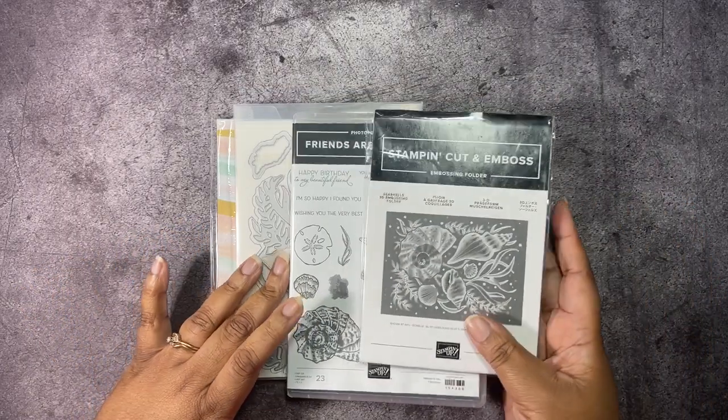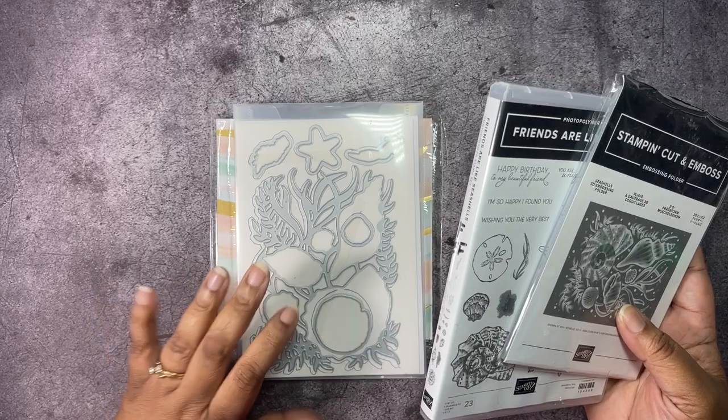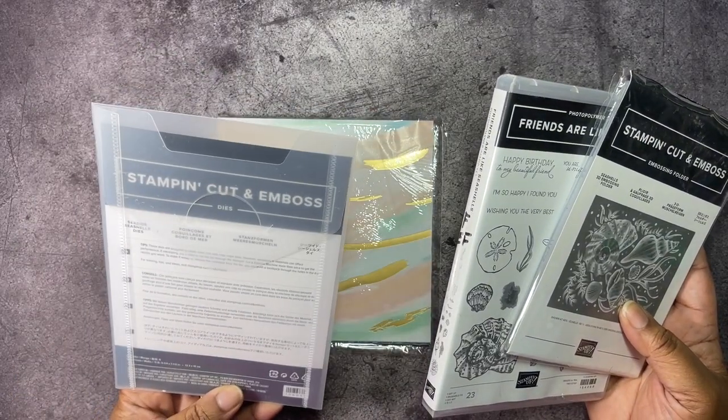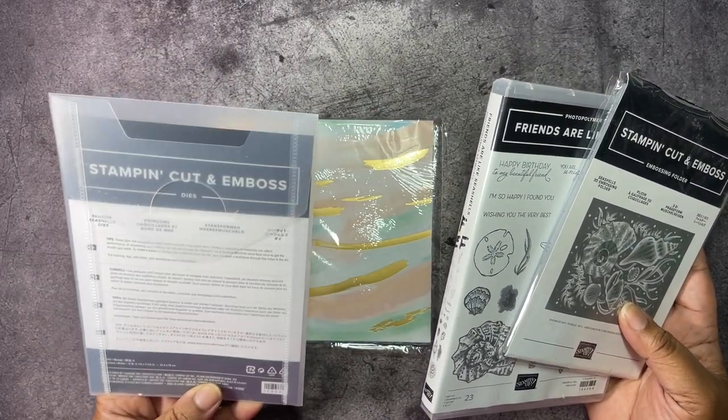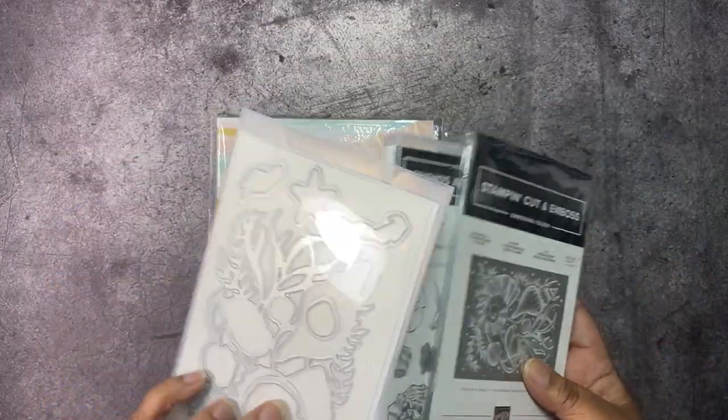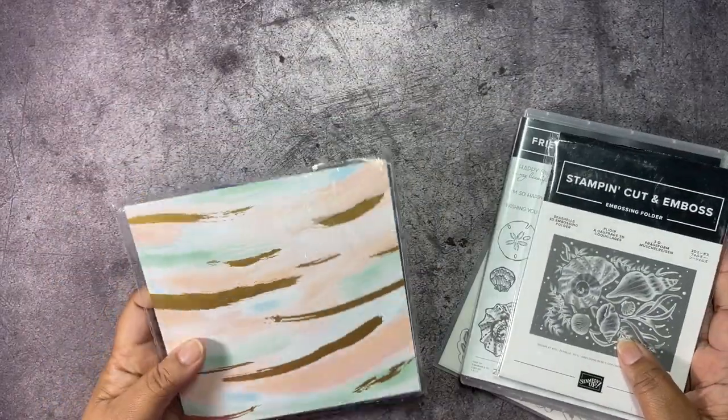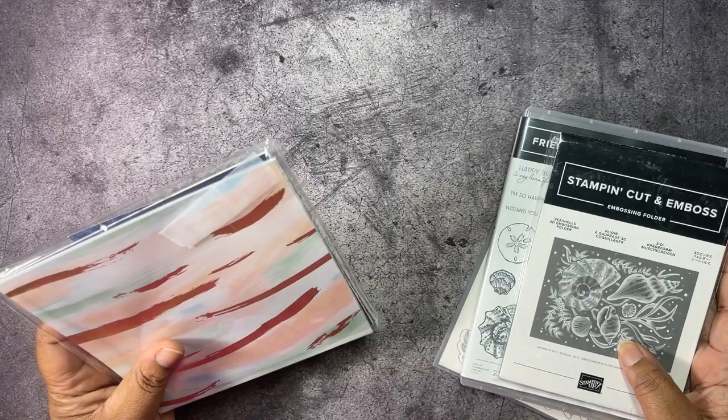It does have coordinating dies but we're not going to be using those. I just wanted you to see them. These are called the Seashell Seaside Seashells dies, and we're also going to be using the By the Bay designer series paper that is in the new mini.